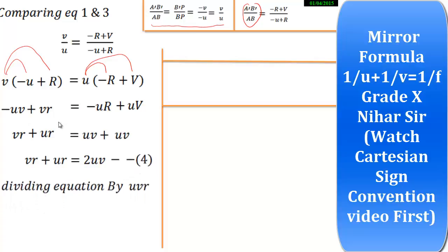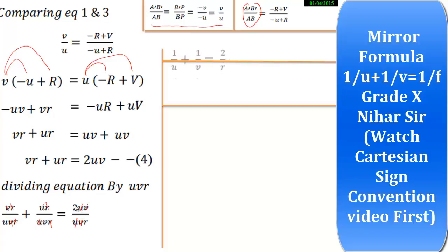Now I will divide the whole equation by UVR. After cancellation: 1 upon U plus 1 upon V equals 2 upon R. So we get: 1/u + 1/v = 2/R.